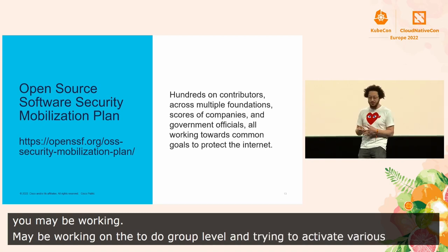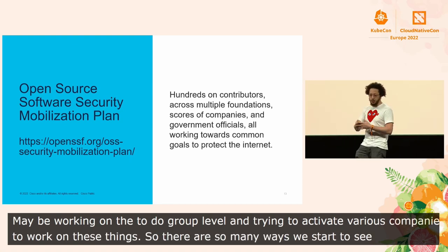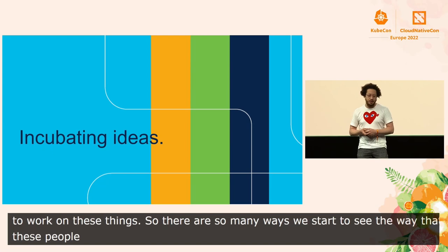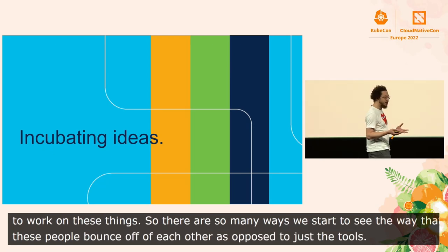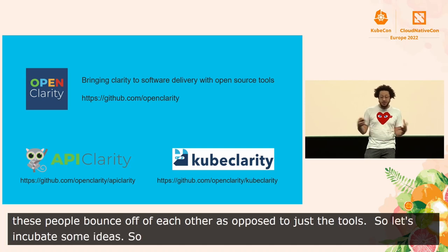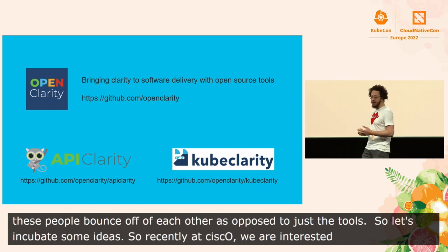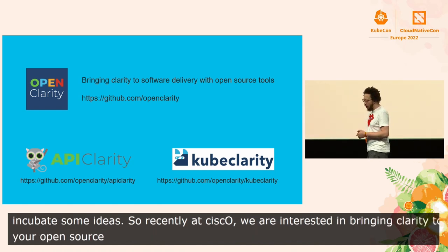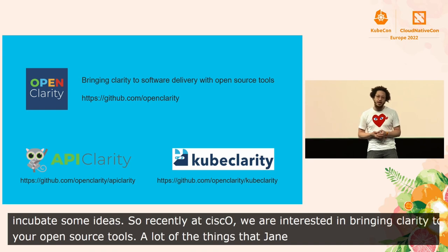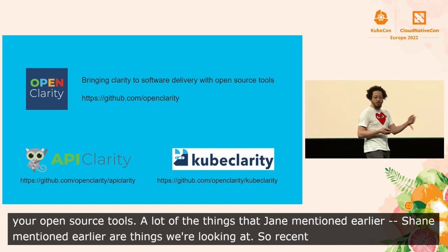You may be working in ACT, or working at the TO-DO Group level, trying to activate various companies to work on these things. There are so many ways where we start to see how these people bounce off of each other, as opposed to just the tools. So let's incubate some ideas. At Cisco, we're interested in bringing clarity to your open source tools — things like API Clarity and Kube Clarity, recently under the OpenClarity umbrella, are some opportunities to contribute with us too.